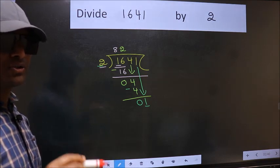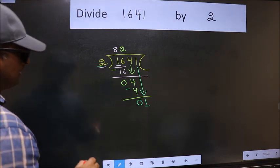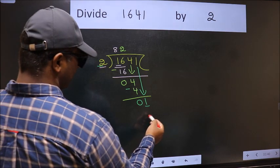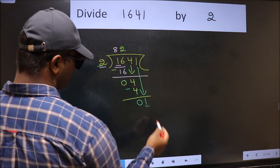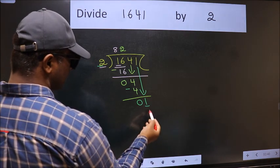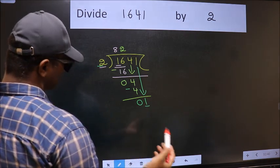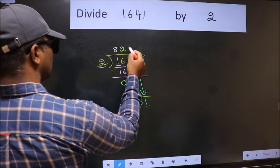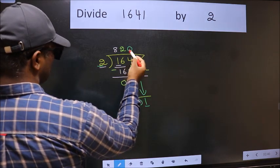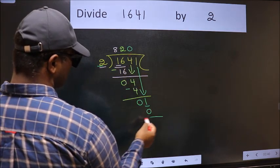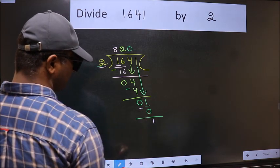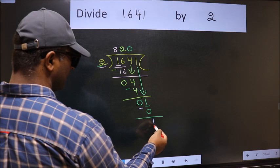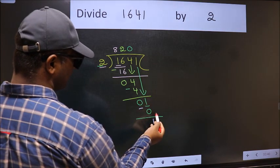Instead of that, what you should think of doing is, which number should we take here? If I take 1, we will get 2. But 2 is larger than 1. So what we should do is we should take 0. 2 into 0, 0. Now we should subtract. We get 1. Over here, we did not bring any number down.